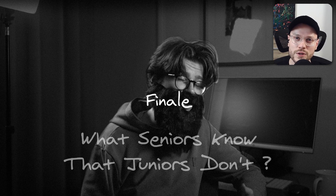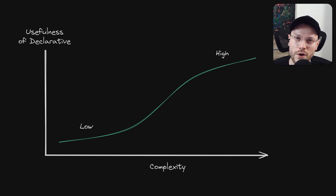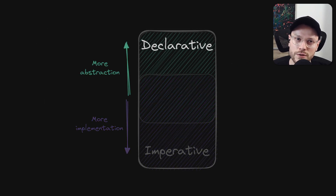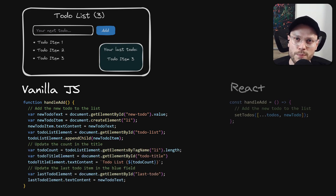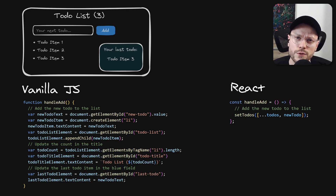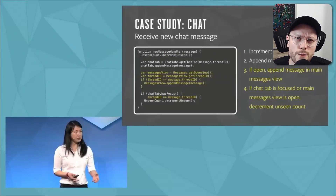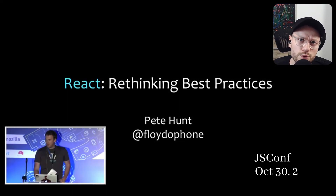Then there is a funny question: what do seniors know that juniors don't? Declarative becomes more useful when complexity grows. It's pretty obvious once you remember that declarative stems from abstraction — there is no need for abstraction if you have a single simple use case. But as you add more and more code, the benefits suddenly become obvious. Declarative is often discussed in a very simplified environment, so a lot of junior devs might initially struggle to understand its usefulness. But declarative nature of React was born out of complexity, and when React first came out there was initial pushback because a lot of people didn't understand the necessity of abstraction.